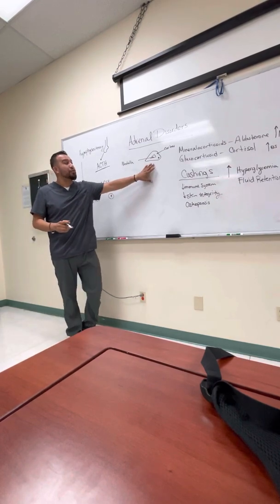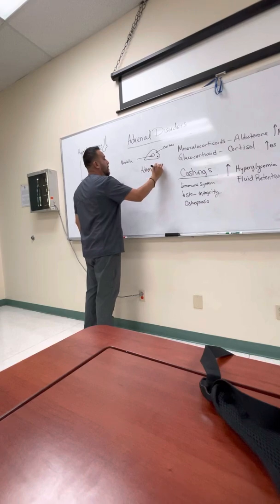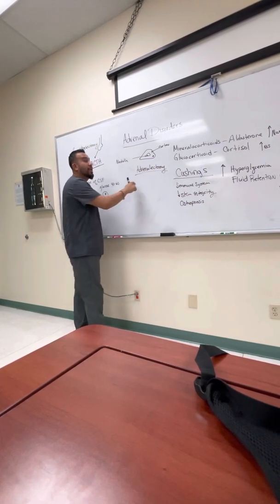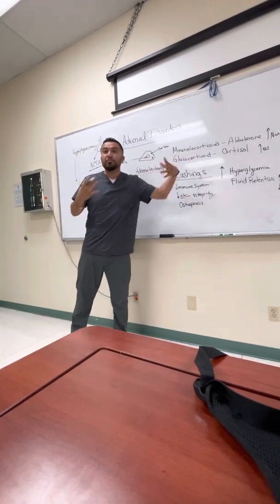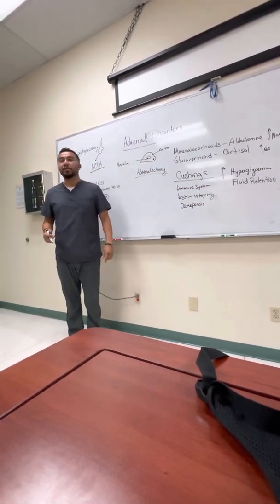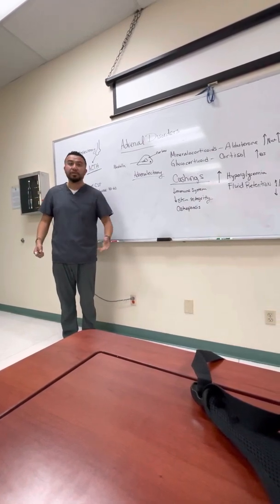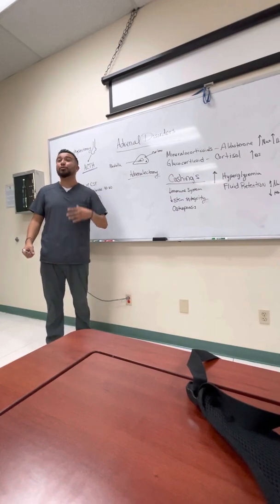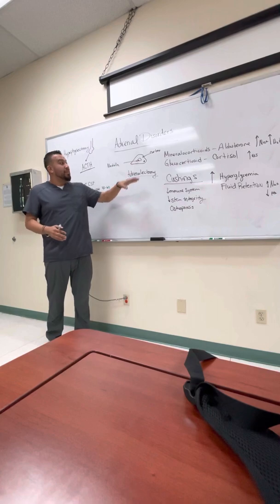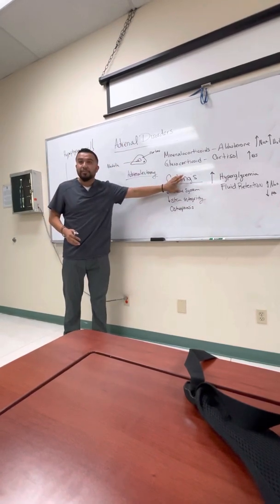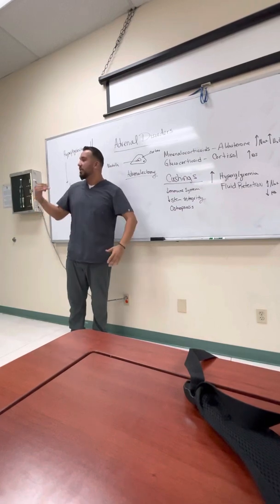If we perform an adrenalectomy, the body will have none of those hormones left after removing the adrenal glands. So we must give the patient medications — steroids such as prednisone, betamethasone, Solu-Medrol, or hydrocortisone — to replace the hormones. Even though the patient had Cushing's syndrome, removing the adrenal glands means we now have no hormones, so we must replace them with medication.